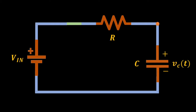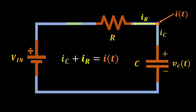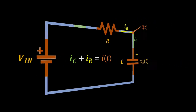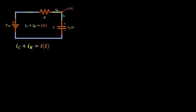Then, we will use nodal analysis at the output node. I will assume two currents leaving the node, which is the current through the capacitor I sub C, plus the current through the resistor I sub R, equivalent to the current entering the node I of T. For the capacitor current, we will use the known formula, that is equivalent to C dV/dT. And with the given direction of the current through the resistor, we can say that the current through the resistor is the output voltage minus the input voltage divided by R. And that is equivalent to our current entering the node I of T, but at the output node, I of T entering the node is equivalent to zero.